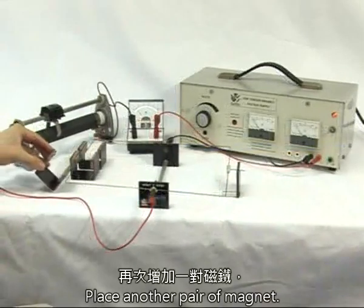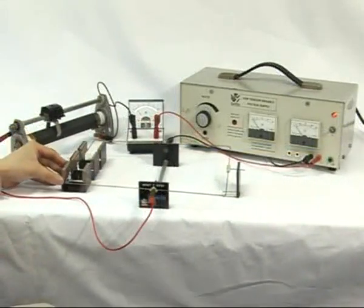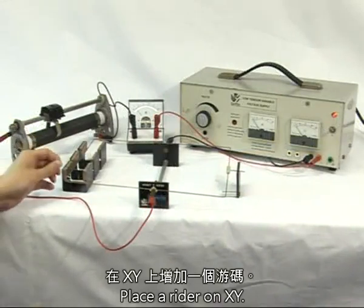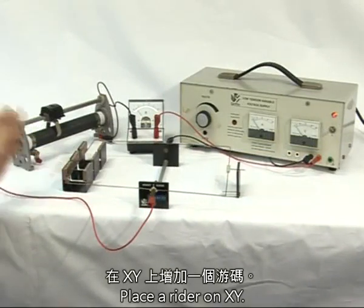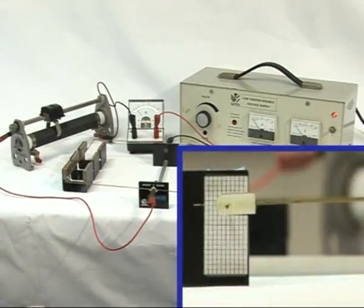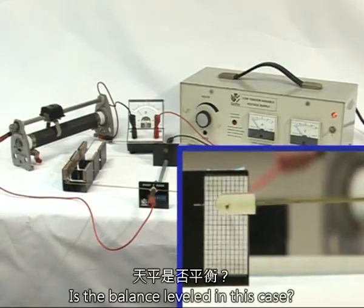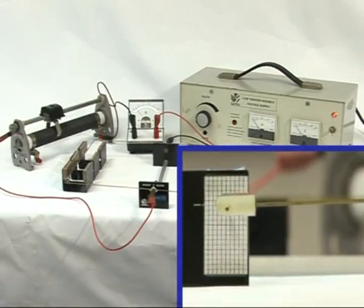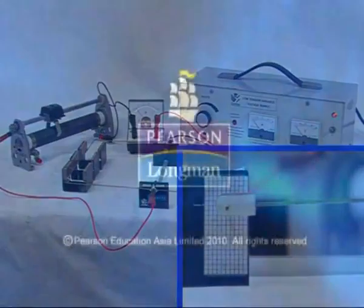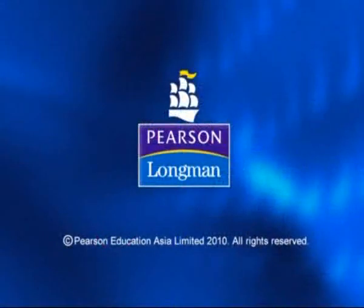Place another pair of magnets. Place a rider on XY. Is the balance levelled in this case?